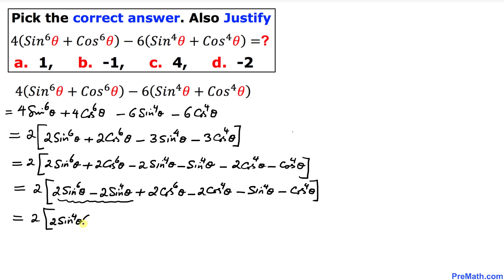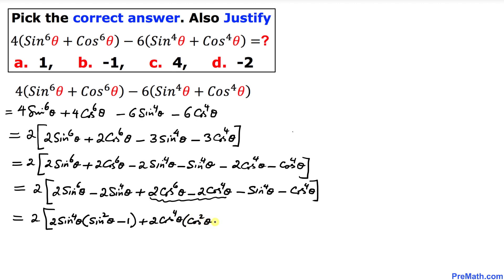Looking at the first two grouped terms, we can see that 2 sine to the power 4 theta is in common, so I'll factor it out, leaving sine squared theta minus 1 inside the parentheses. In the next two terms, cosine to the power 4 theta is in common, so factoring that out leaves cosine squared theta minus 1. The remaining terms, negative sine to the power 4 theta minus cosine to the power 4 theta, stay as they are.